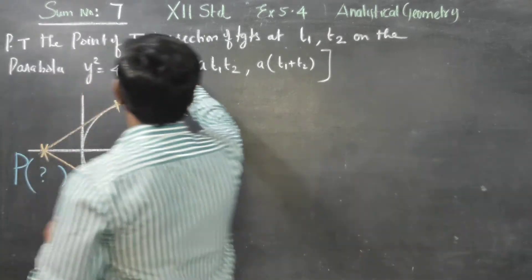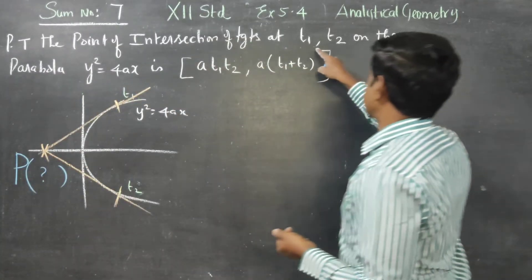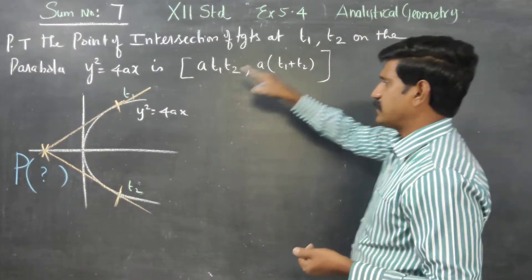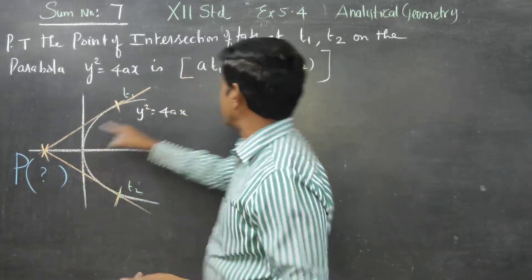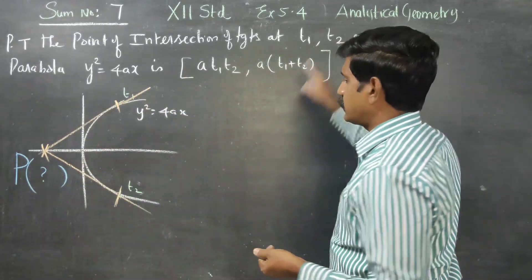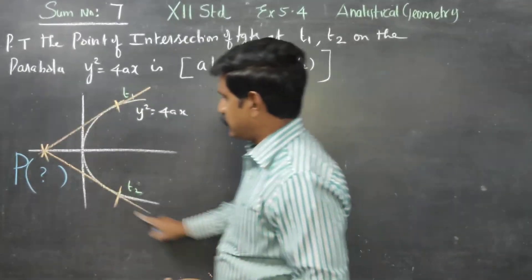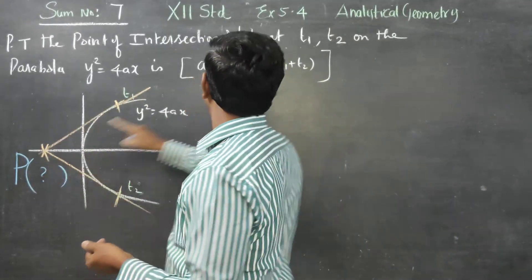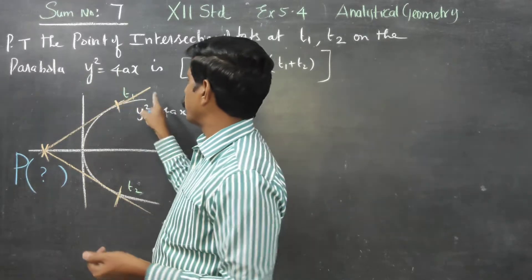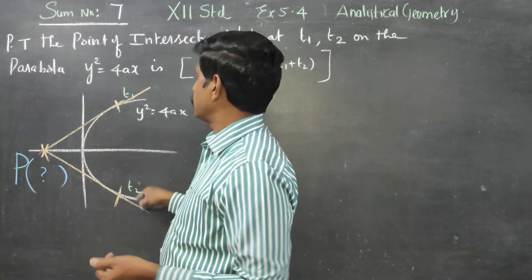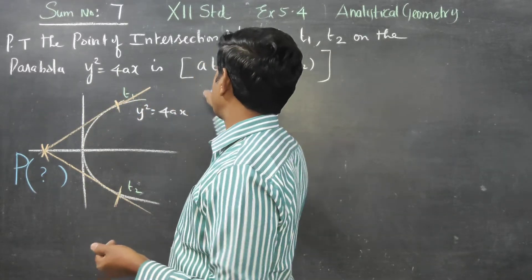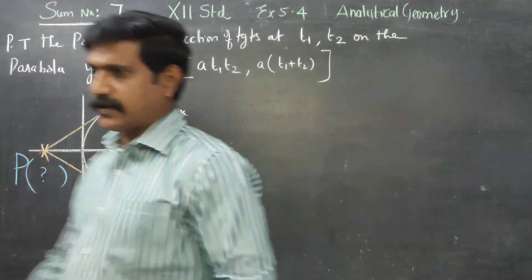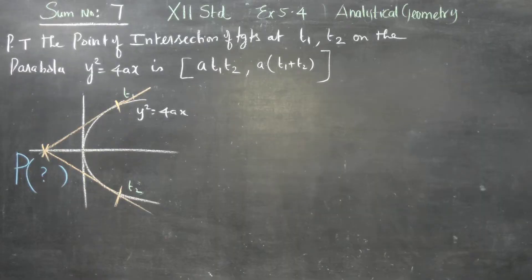We need to prove that the point of intersection of the tangent at T1 and the tangent at T2 on the parabola intersects at (aT1T2, a(T1+T2)).